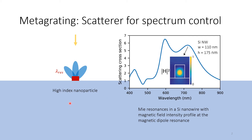Those high-index nanoparticles scatter the incoming light on different resonance wavelengths. Here we show an FDTD simulation of a silicon nanowire on a sapphire substrate with a width of 110 nanometers and a height of 175 nanometers, and you can see that there are several resonances in the optical regime. We look at the first one more closely and see — plotting the magnetic field — that we have a magnetic dipole resonance in that case.